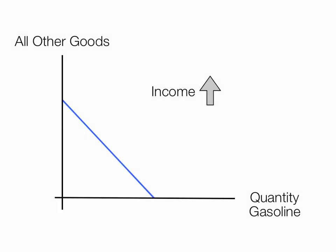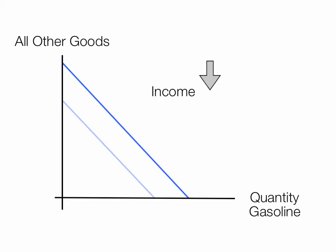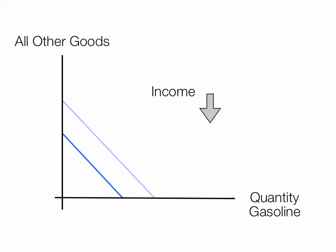In this slide, I'm going to talk about the impact of income on a budget line. Remember, the blue line is the budget line. As income goes up, the budget line shifts outward, and as income goes down, the budget line shifts inward.